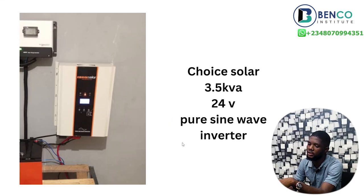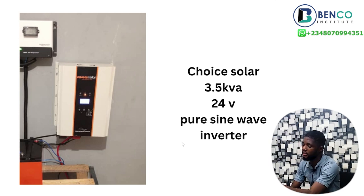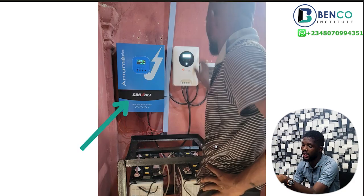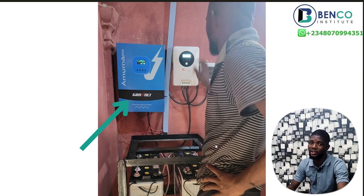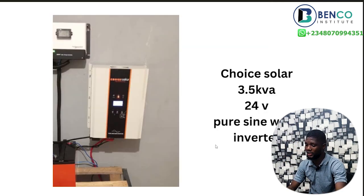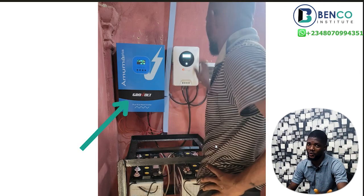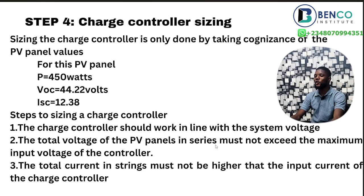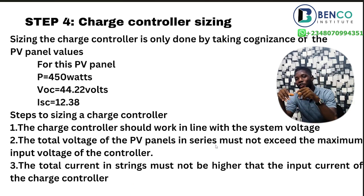We went with a Choice Solar inverter — 3.5 kVA, 24 volts, pure sine wave. However, what I actually wanted was a Growatt inverter system, but at that point in time I couldn't get Growatt and settled for Choice. That is not to say Choice is not good — Choice is equally very good and I've used it several times. I just have a preference for Growatt. Next up, which happens to be the last component, is the charge controller sizing.